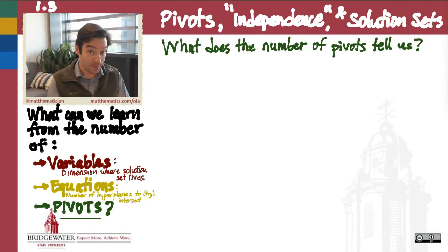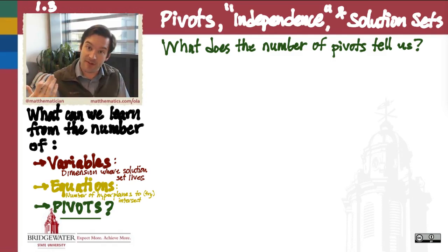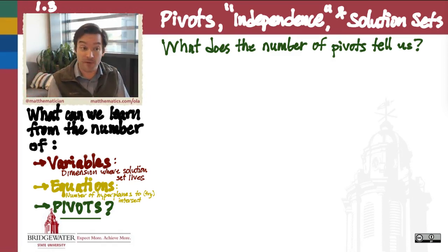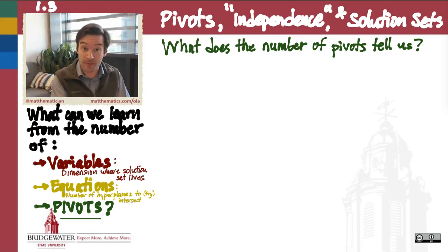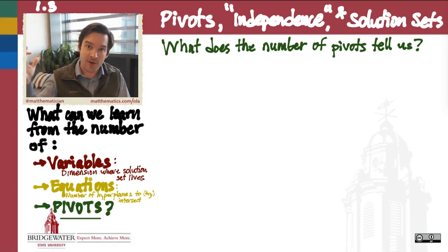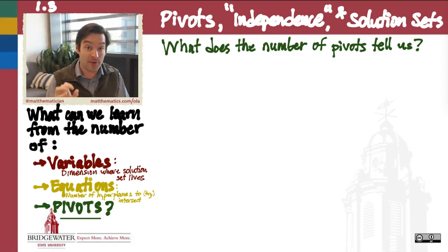So our next goal is to figure out what the number of pivots in a linear system of equations tells us. The number of pivots is more of a challenge to determine, because it depends on all of the qualities of that system — more than just the number of variables, more than just the number of equations. The number of pivots is something we can only discover after finding a row echelon form for our matrix to really unveil its true colors. In our next video we're going to take a closer look at what the number of pivots tells us about the nature of the solution set.